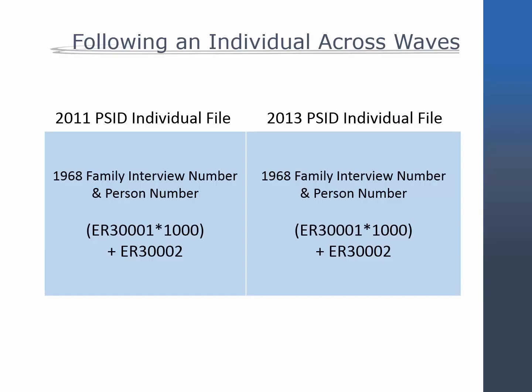Individuals are linkable across waves through their cross-wave unique identifier. As described in detail in the video tutorial Merging PSID Records Part 1, this unique identifier consists of two variables, ER30001 and ER30002, or the 1968 ID and person number. Some statistical software programs let you specify two variables for merging. If you prefer to create a single ID for merging, you can multiply the 1968 ID by 1000 and then add the person number, so each individual can be uniquely identified. The combination of the 1968 ID and person number is the same across all waves in which an individual appears, so it can be used to link data for individuals across years.